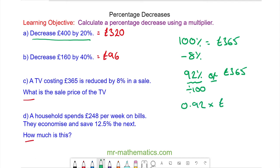by 365 pounds. So the sale price of a TV is 335 pounds 80.